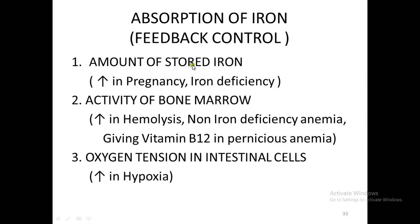Iron absorption depends on the amount of stored iron in the body. If iron stores are low — as in pregnancy or iron deficiency — more than 10% is absorbed. Normally, out of 10 milligrams in the diet, only one milligram (10%) is absorbed. In pregnant women or patients with iron deficiency anemia, more than 10% is absorbed. Increased activity of the bone marrow also increases absorption. In hemolysis, even in non-iron deficiency anemia, the body perceives an increased need for iron. Giving vitamin B12 in pernicious anemia also increases iron absorption. When oxygen tension in the intestinal cells is low — as in hypoxia — the body again increases iron absorption.